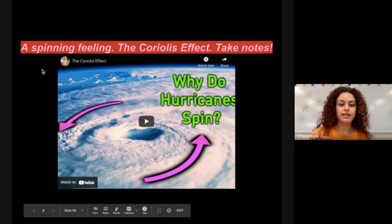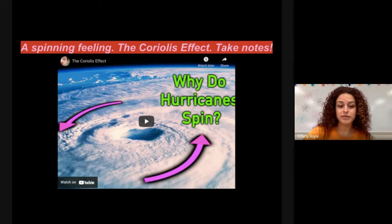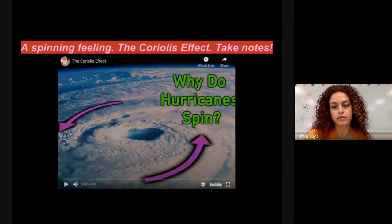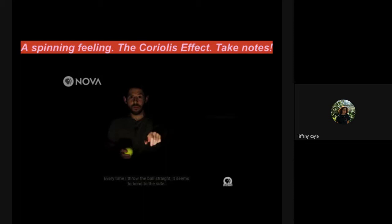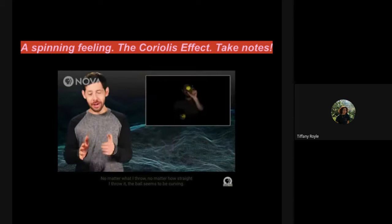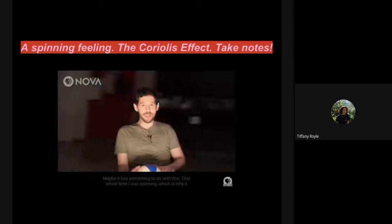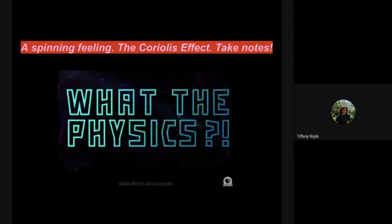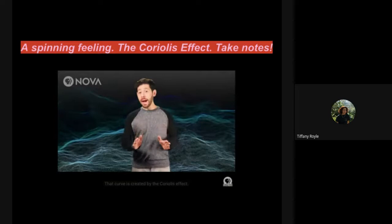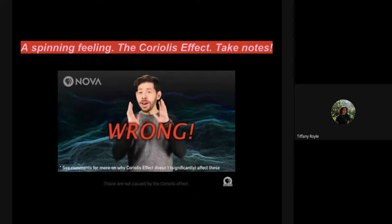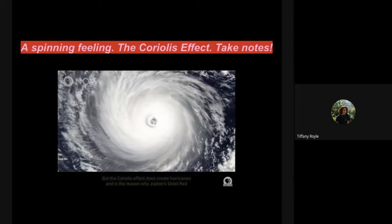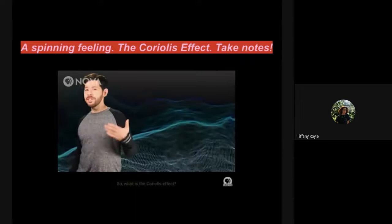So Coriolis effect basically is caused by the Earth spinning. Let's see how that actually makes hurricanes spin. What's going on here? Every time I throw the ball straight, it seems to bend to the side. No matter what I throw, no matter how straight I throw it, the ball seems to be curving. Maybe it has something to do with this. That whole time, I was spinning, which is why it looks like I'm about to puke. That curve is created by the Coriolis effect. You may have heard that it makes water in the bathtub spiral down the drain a certain way, or that it determines the way a toilet flushes. That's actually wrong. Those are not caused by the Coriolis effect. But the Coriolis effect is what makes hurricanes spin, and it's the reason why Jupiter's great red spot is spinning the way that it is. So what is the Coriolis effect?